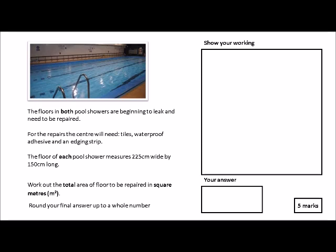Let's read the question. The floors in both pool showers are beginning to leak and need to be repaired. For the repairs, the center will need tiles, waterproof adhesive, and an edging strip. The floor of each pool shower measures 225 centimeters wide by 150 centimeters long. Work out the total area of floor to be repaired in square meters. Round your final answer up to a whole number.